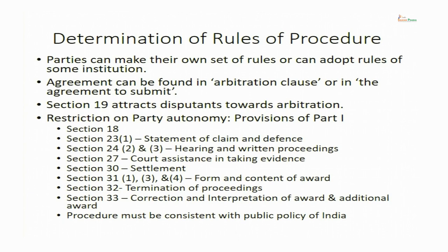Section 30 talks about settlement — the tribunal is obliged to encourage parties to go for more amicable methods of dispute resolution like conciliation and mediation. Section 31 talks about the form and content of the arbitral award; the requirements of section 31 subsections 1, 3, and 4 are binding and must be followed. Section 32 tells how the proceedings will terminate — those methods must be incorporated in your procedure. Section 33 provides a mechanism to make corrections in the award and to pass an additional award. So, whatever procedure you adopt is subject to these provisions at least.